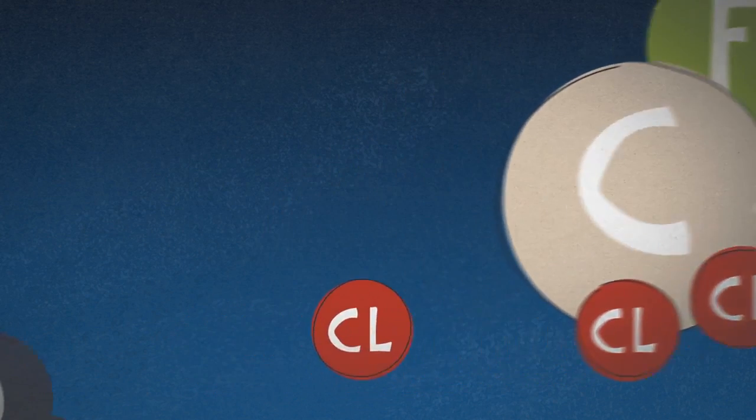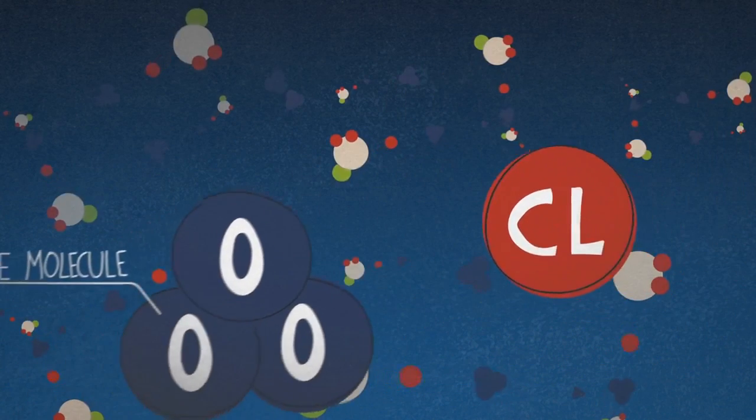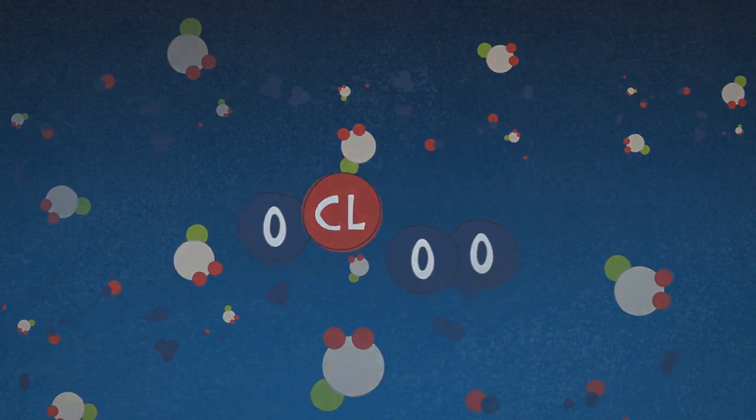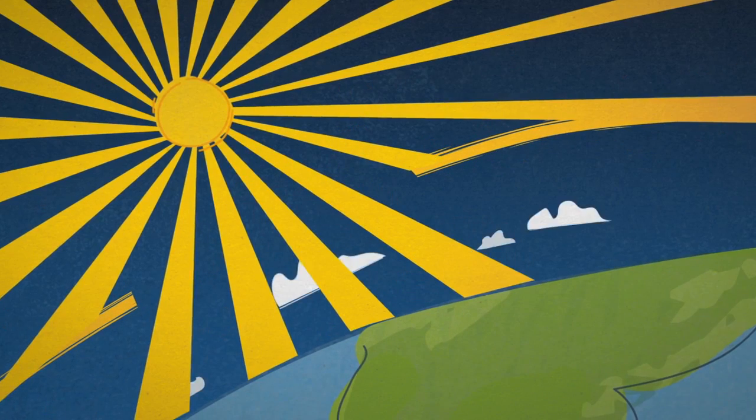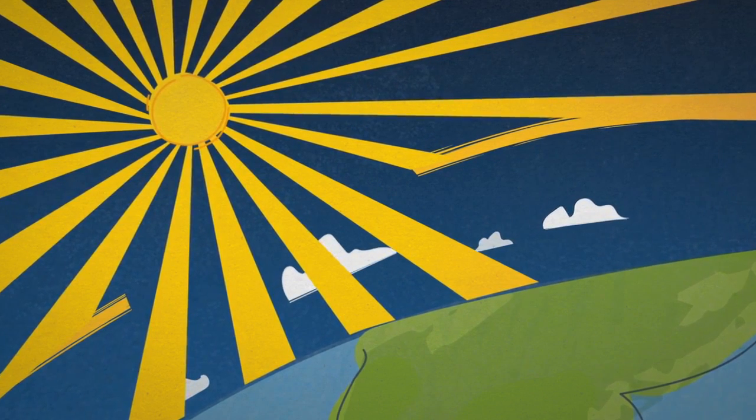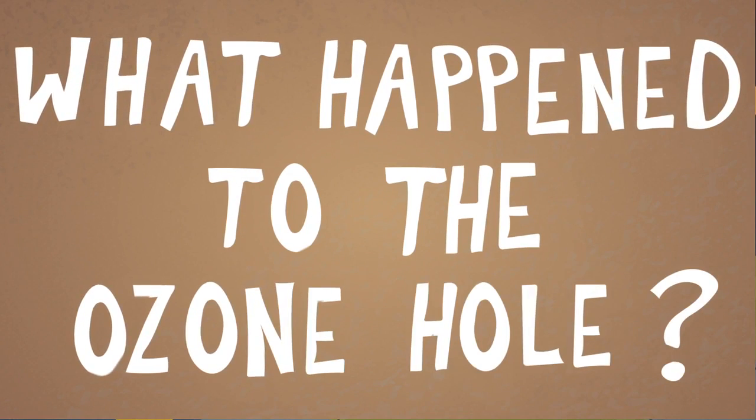Under ultraviolet radiation in the atmosphere, these substances break down and react with ozone, destroying the Earth's protective ozone layer. But, to answer the original question, what happened to the ozone hole?